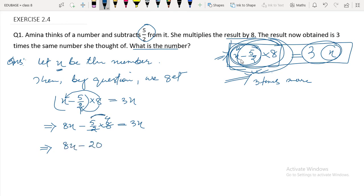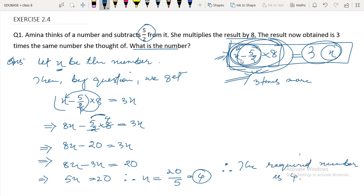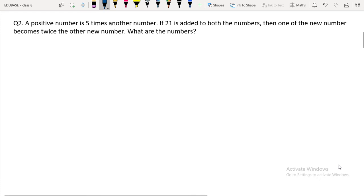So 8x minus 20 equals 3x. Moving 3x to the left side, we get 8x minus 3x equals 20, which gives 5x equals 20. Therefore x equals 4. The required number is 4.